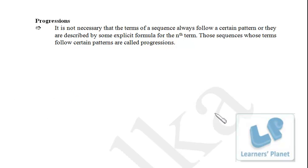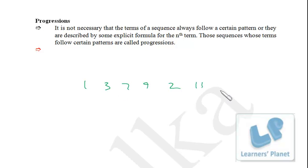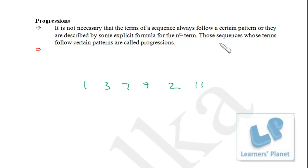The first thing we look at is a sequence. A sequence simply means there are various terms arranged together. For example, 1, 3, 7, 9, 2, 11 — these are terms of a sequence, but they are not following any pattern. When terms do not follow any pattern, it is just a sequence. It is not necessary that the terms always follow a certain pattern or are described by some explicit formula for the nth term.